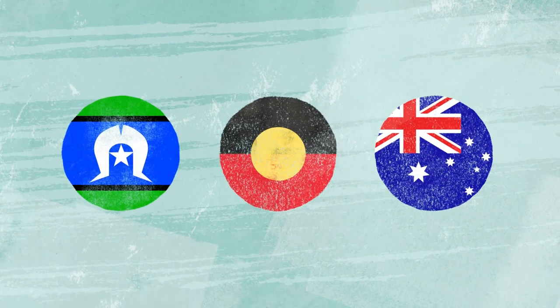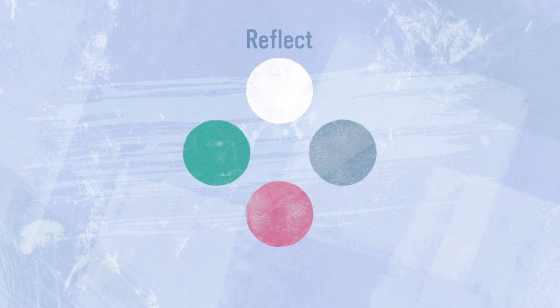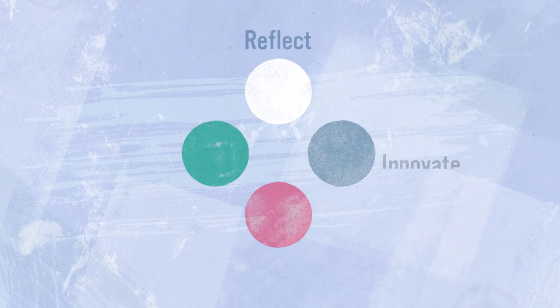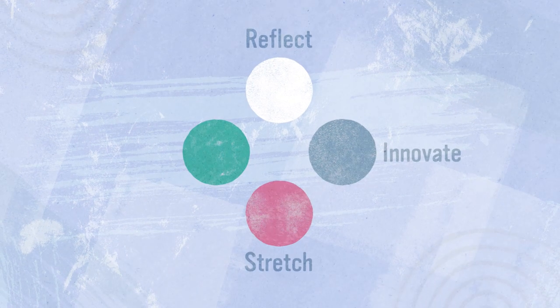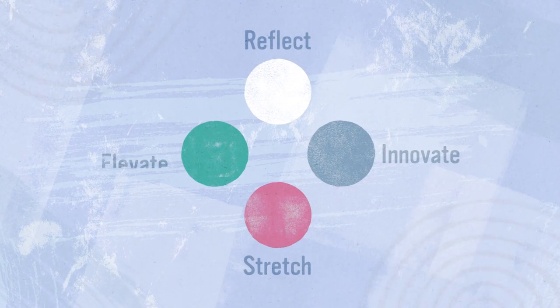Currently, there are four types of RAPs that an organisation can develop: Reflect, Innovate, Stretch and Elevate.